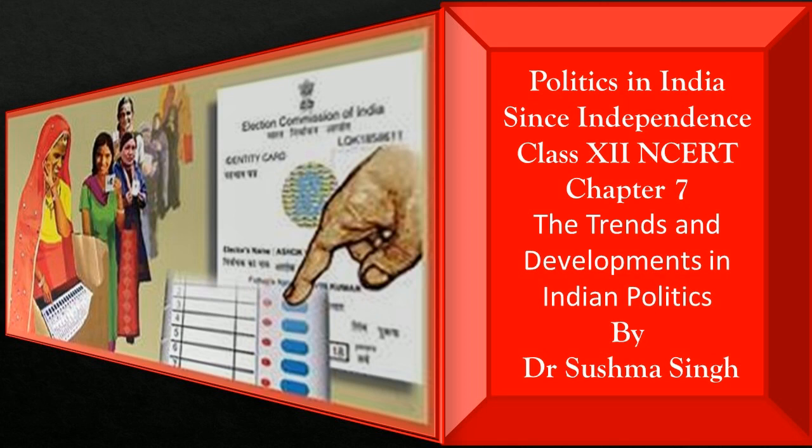Finally, the assassination of Rajiv Gandhi in May 1991 led to a change in the leadership of the Congress Party. He was assassinated by a Sri Lankan Tamil linked to the LTTE when he was on an election campaign tour in Tamil Nadu. In the elections of 1991, Congress emerged as the single largest party. Following Rajiv Gandhi's death, the party chose Narasimha Rao as the Prime Minister.